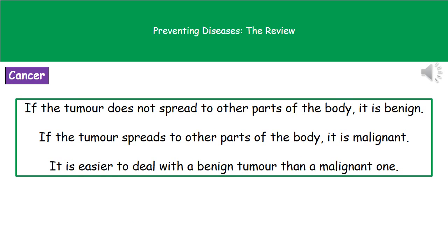There are various types of cancer, and when we get a tumour it won't always be one that spreads all over the body. There are two types of tumours: a benign tumour, which won't spread to any other part of the body, and a malignant tumour, which will spread to other parts of the body. It's far easier to deal with a benign tumour because it occurs in just one place and can be found and treated effectively, whereas a malignant tumour may have spread, making it much harder to treat.